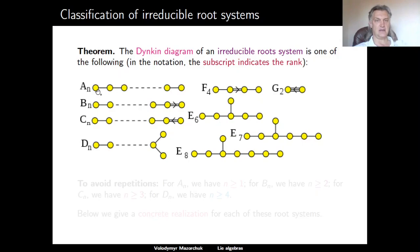The diagram An is just a line. The diagram Bn is a line which ends with a double edge directed in one way. The diagram Cn is the same as Bn, but the direction of the double edge is reversed. The diagram Dn is a line which ends with a triple point. The diagram G2 is the only diagram with a triple edge between two vertices. The diagram F4 is the only diagram where you have a double edge in the middle. And the diagrams E6, E7, and E8 are three exceptional diagrams with a triple point not at the end of the diagram.